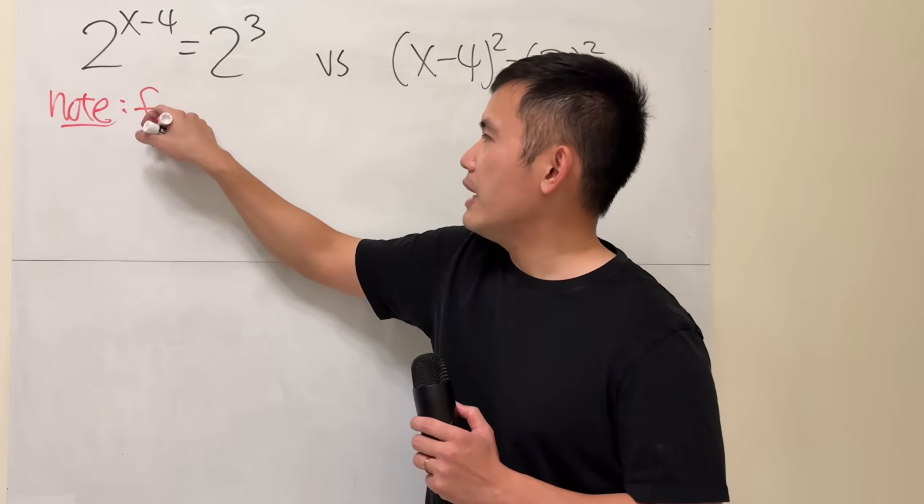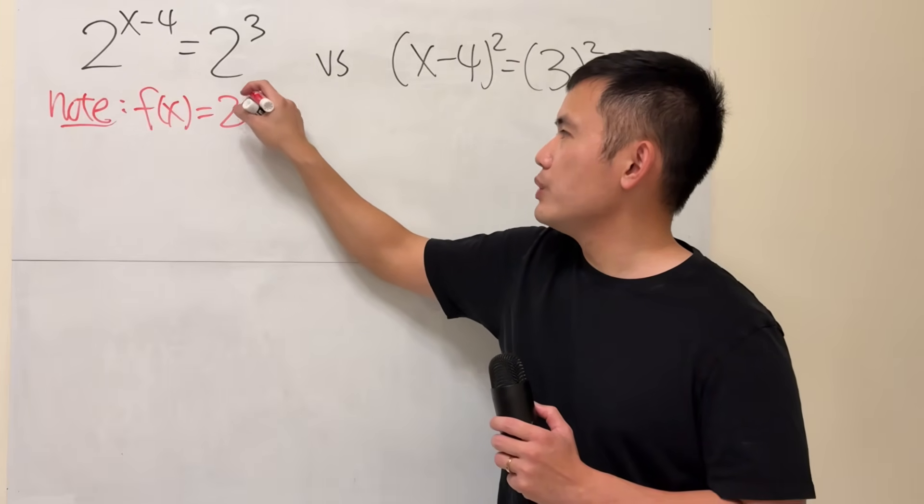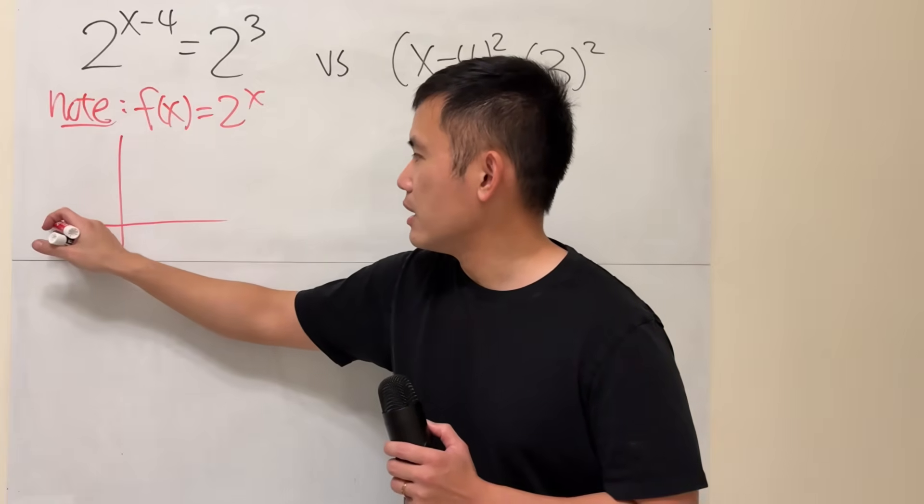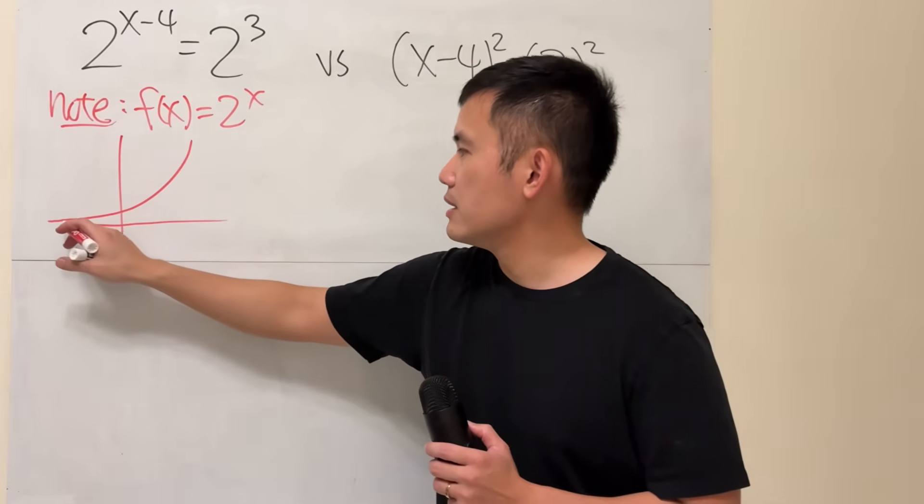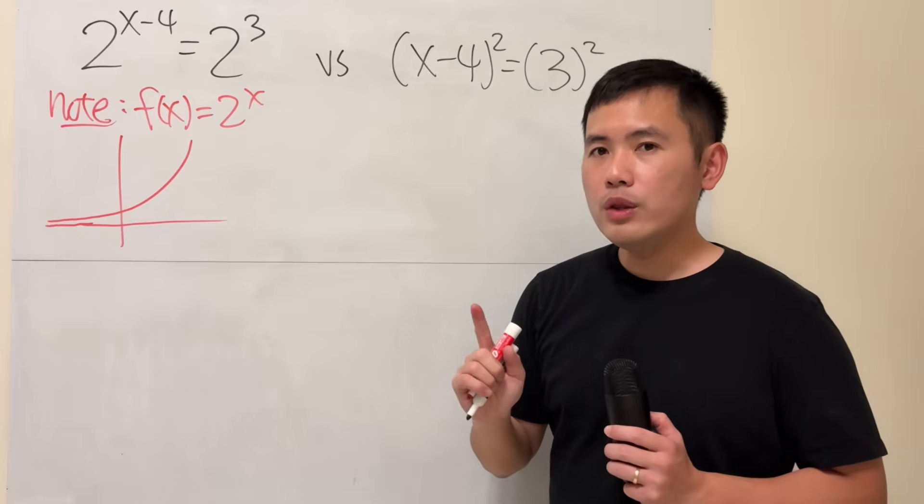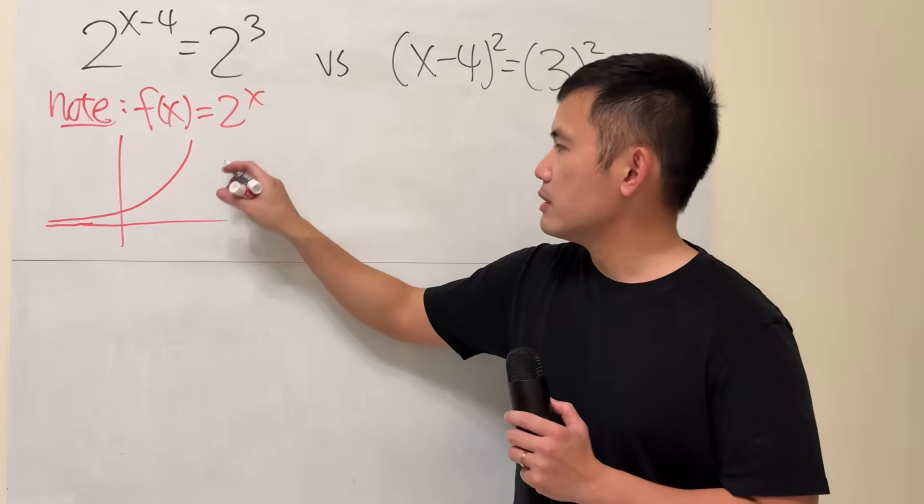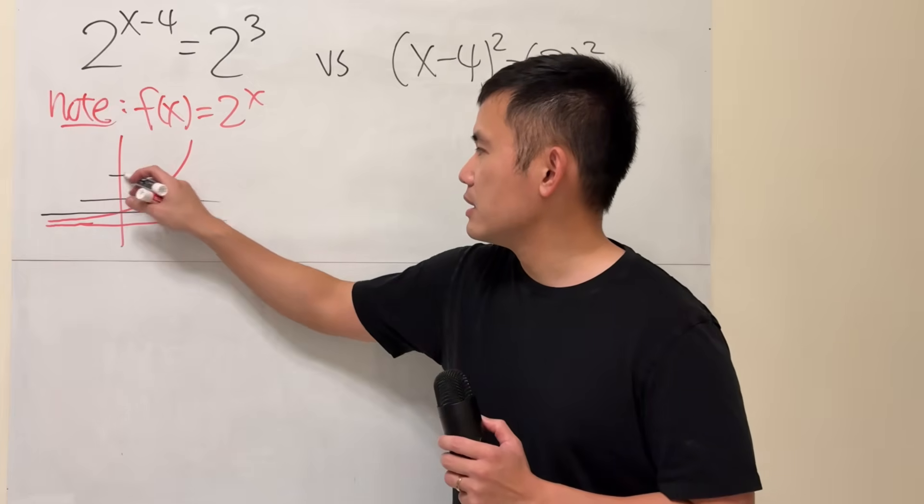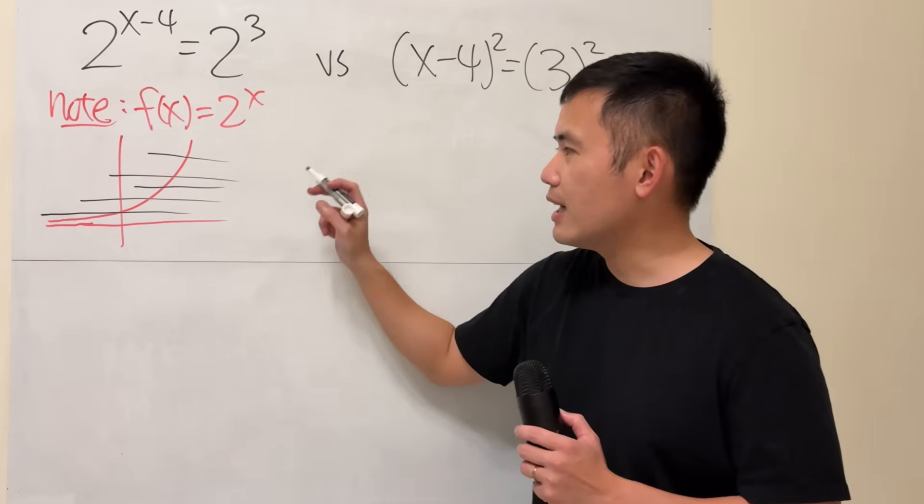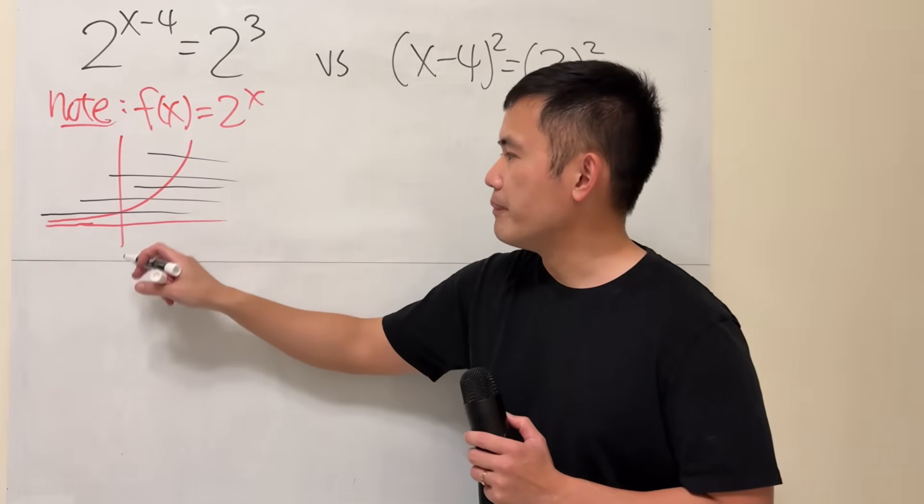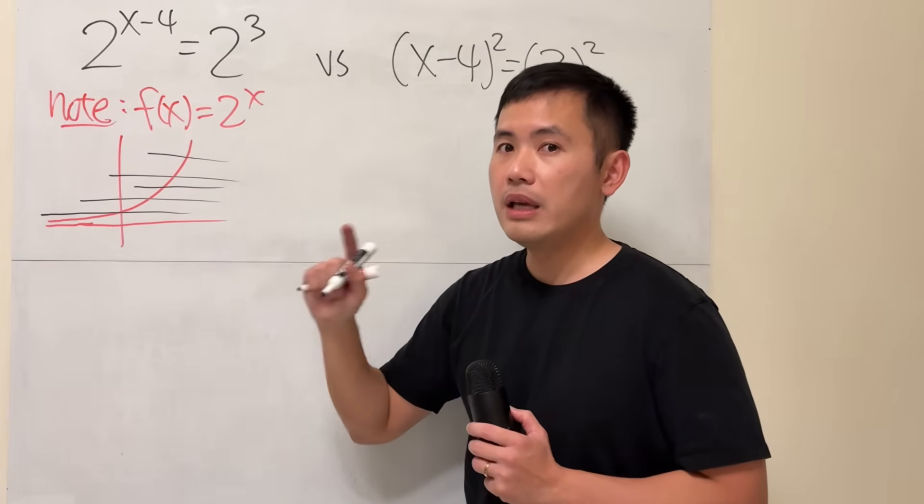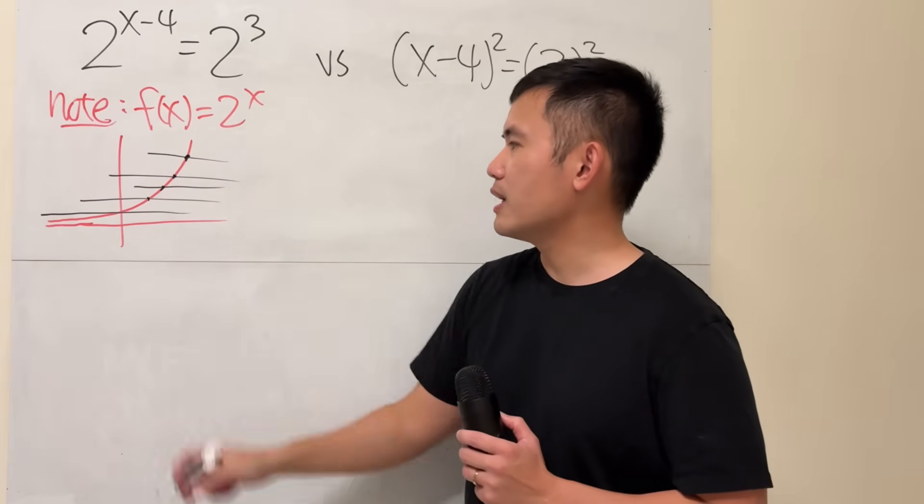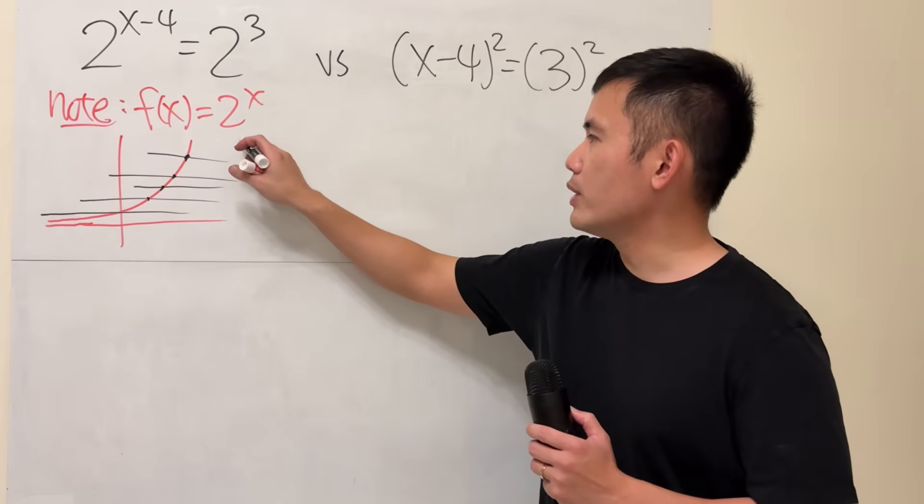If we graph f of x is equal to 2 to the x, we are going to get a curve that looks like this. And the one-to-one function is that if you keep drawing horizontal lines, you can see that the horizontal line, any of them, can only cross the curve at most one time. Just one time. So this is the one-to-one function.